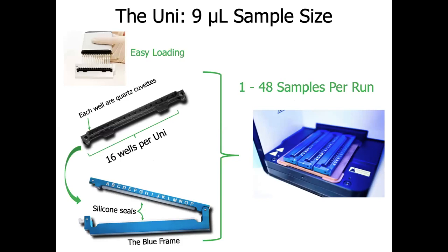The sample holder for the UNCLE is called the UNI. The UNI contains 16 microcuvettes, which each holds 9 microliters of sample per well. The spacing between the wells is the same as a 384-well plate, so you can use a multi-channel pipetter to load the samples. Once the samples are loaded into the UNIs, they are clamped in between the blue frames, which have the silicone seals. Once completely closed, it is completely sealed, minimizing evaporation during thermal ramping. Additionally, as you're working with infectious material or viruses, it does not touch the actual instrument, minimizing any exposure. You can load up to three UNIs, allowing you to run up to 48 samples at a time.